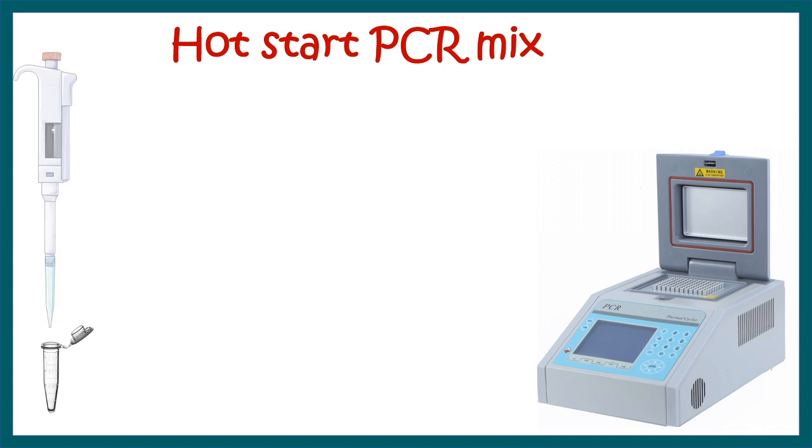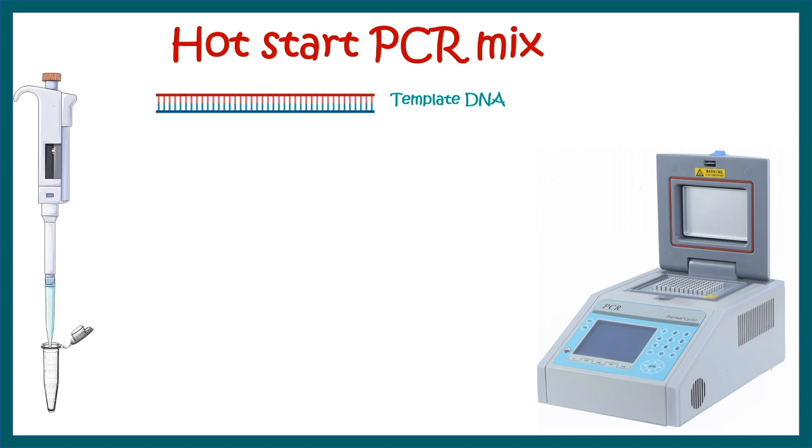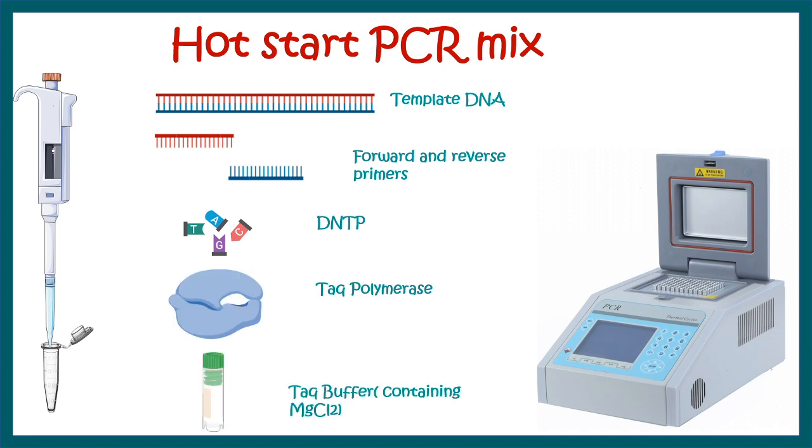Hot start PCR mix contains as usual, the template DNA, forward reverse primer, DNTP, TAC polymerase, MGCL2 containing buffer, all of these, but along with it, it has a chemical X and we need to understand what this chemical X is.